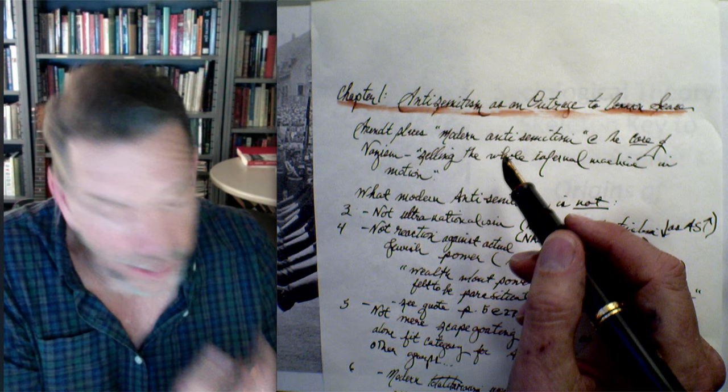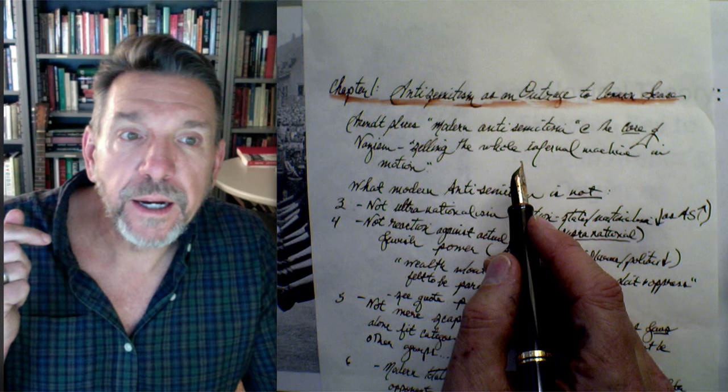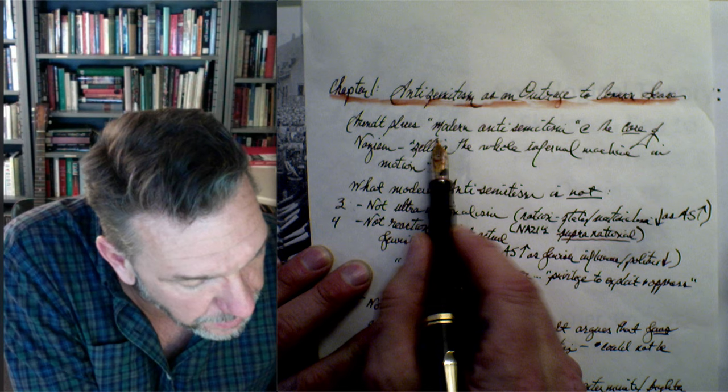Now turning to a skeleton key to Arendt's Origins of Totalitarianism. The first chapter is titled 'Antisemitism Is an Outrage to Common Sense.' Arendt always calls this 'modern antisemitism' and places it at the core of Nazism, arguing that it sets the whole infernal machine in motion. She identifies what modern antisemitism is not: first, it's not ultra-nationalism — it tends to be decoupled from nationalism.